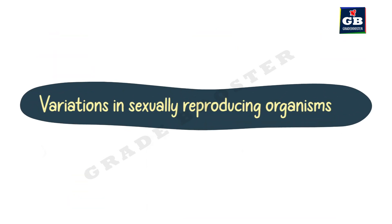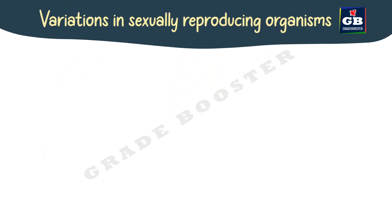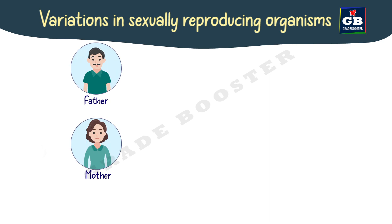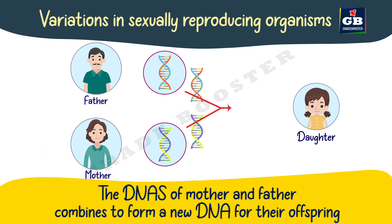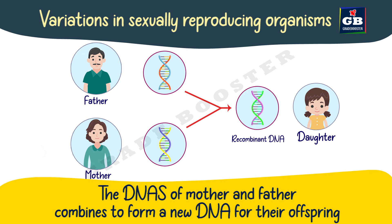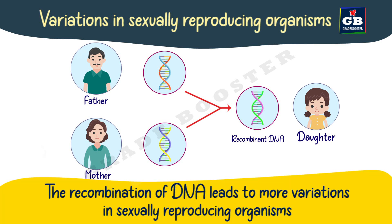In sexually reproducing organisms, there are two parents — a male and a female. The babies get genetic material from both parents. The DNA of the mother and the DNA of the father combine to form a new DNA. This process is called recombination of DNA. The new DNA is different from both the mother's and father's DNA, containing characteristics from both as well as some new characteristics. Therefore, there are more variations in organisms that reproduce sexually — the recombination of DNA leads to variations in sexually reproducing organisms.